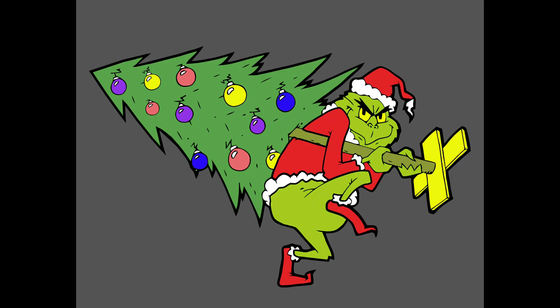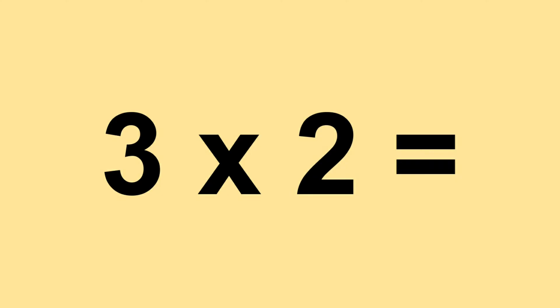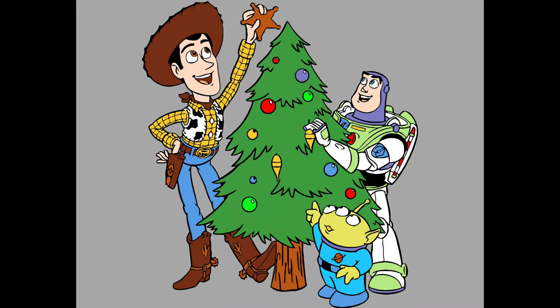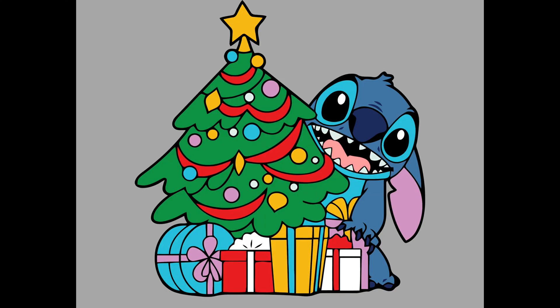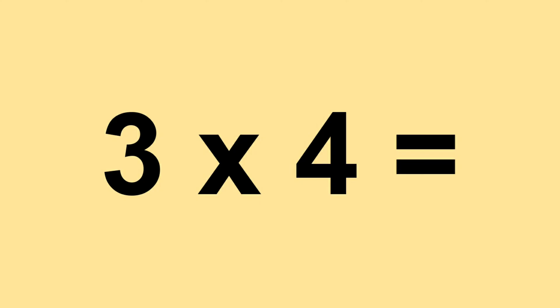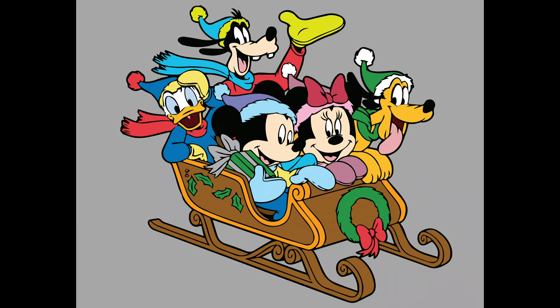Three times zero equals zero. Three times one equals three. Three times two equals six. Three times three equals six. Three times four equals twelve. Three times five equals fifteen. Three times six equals eighteen.